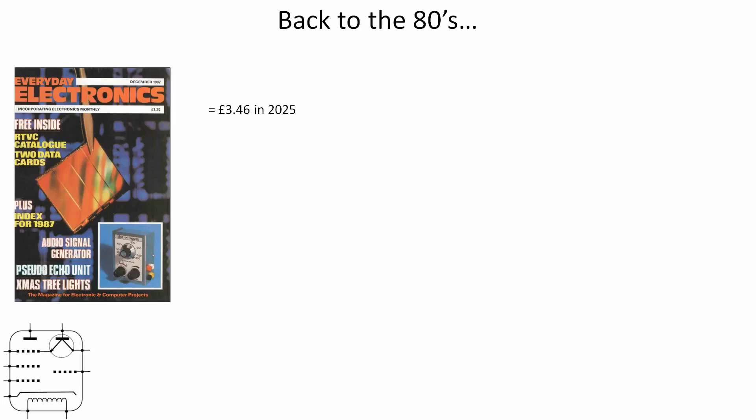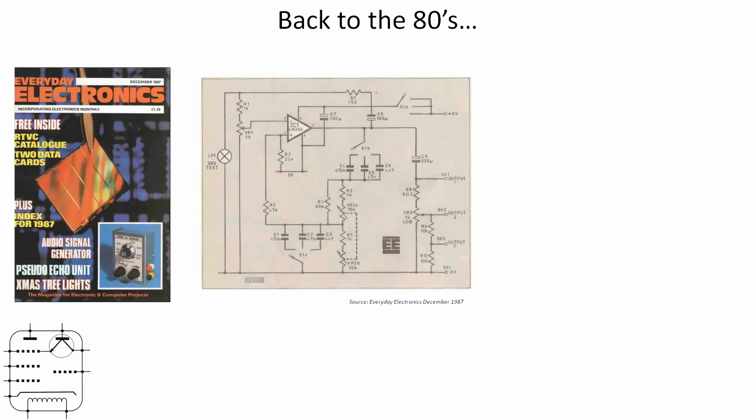But what caught my eye is that one of the projects on the front page there, the audio signal generator. Now, if we look inside the magazine, here's the circuit diagram, and what caught my eye was the bulb on the left-hand side. And I thought, gosh, fancy using a bulb as an indicator to say this thing's switched on when it's battery powered. And actually, if you look for more than a few seconds, it isn't a bulb to indicate that power is switched on. You could use an LED for that. They were certainly available in 87. It's actually been used as part of the feedback circuit in the op-amp, and we'll talk about why a little bit later on.